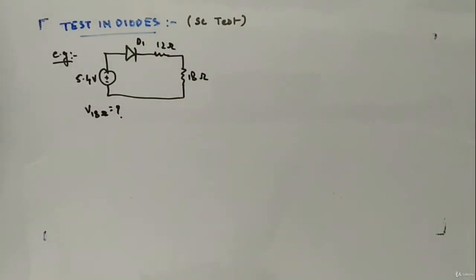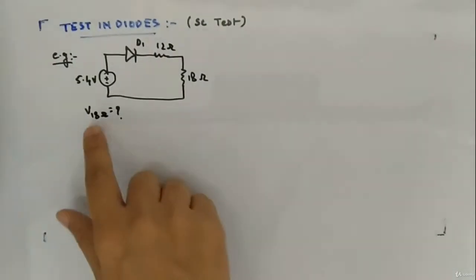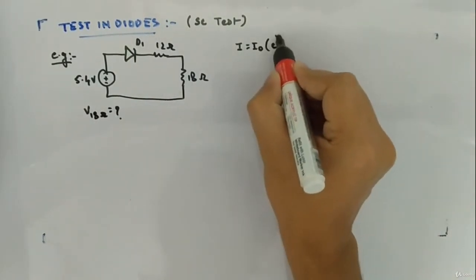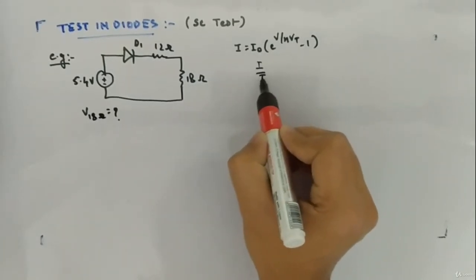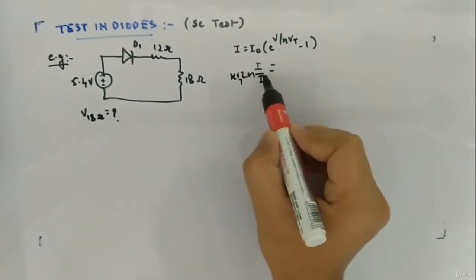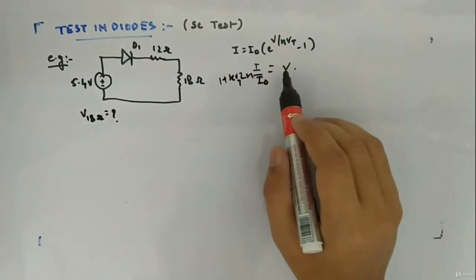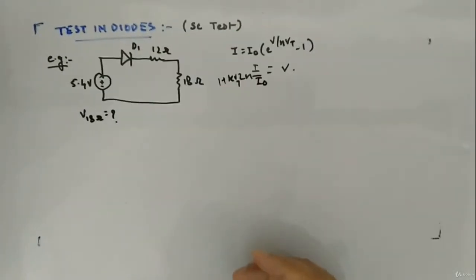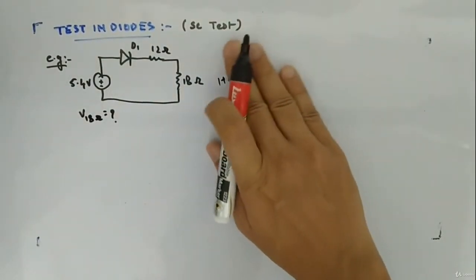Let's see an example. This circuit consists of diode D1, a 12-ohm resistor, an 18-ohm resistor, a 5.4-volt voltage source, and we have to calculate the voltage across the 18-ohm resistor. We don't use the direct diode equation — I = I₀(e^(V/ηVt) - 1) — because solving that with KVL and KCL makes the calculation very difficult. That's the reason we approximate the diode using the short circuit and open circuit test.